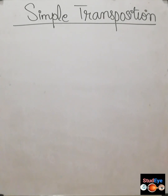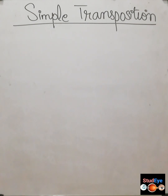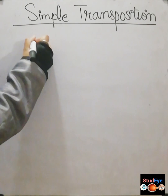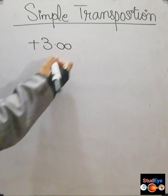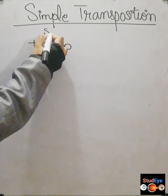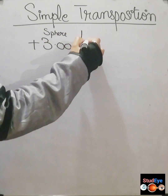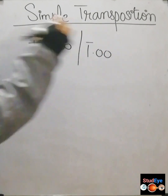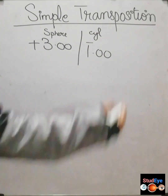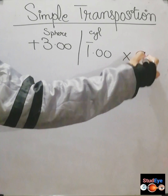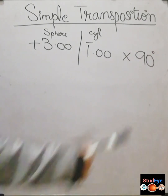Today we are going to discuss simple transposition. This is very important in clinical practice because patients sometimes do not appreciate minus lenses, so you can transpose them into plus. Here we have a prescription of plus 3 sphere, a cylindrical correction of minus 1, and the axis is 90 degrees.